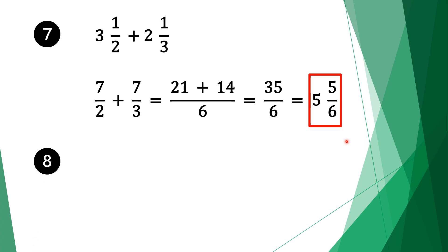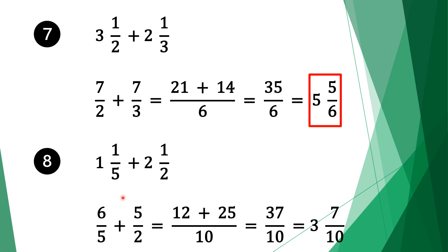Moving on to equation 8. We have 1 and 1 fifth plus 2 and a half. Again we want to convert to normal fractions first. We multiply the denominator: 5 times 1 is 5, plus 1 is 6. Bring the denominator 5. Bring the plus sign. Do the same for the second fraction: 2 times 2 is 4, plus 1 is 5. Bring the denominator 2. Now we need to find a common factor — we multiply 5 and 2 to get 10.